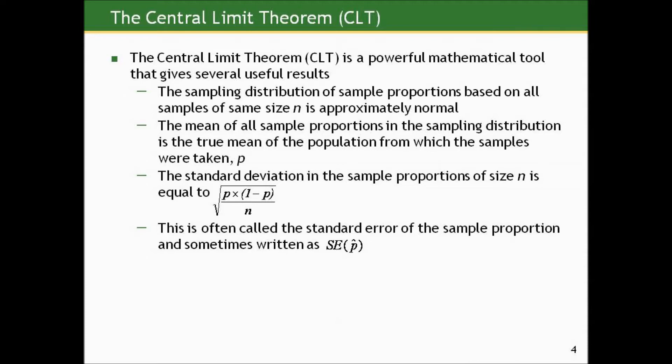The mean of all sample proportions in the sampling distribution would be the true proportion in the population from which the samples were taken, what we'll represent with a p without a hat. And the standard deviation of the sample proportions of size n is equal to the square root of p times 1 minus p over n. This is often called the standard error of the sample proportion, and sometimes written as SE of p hat.